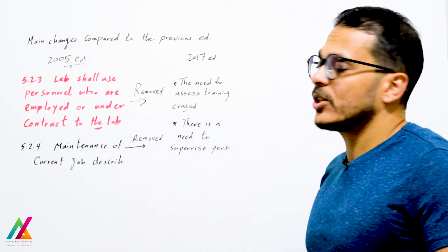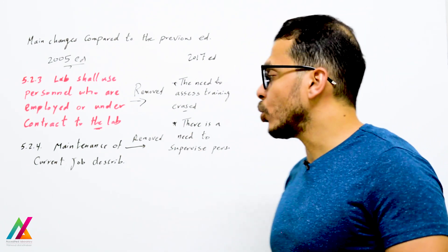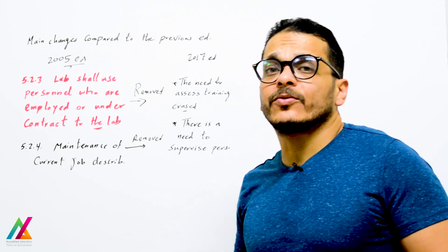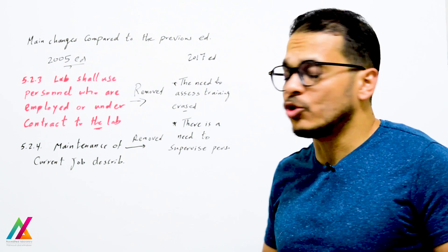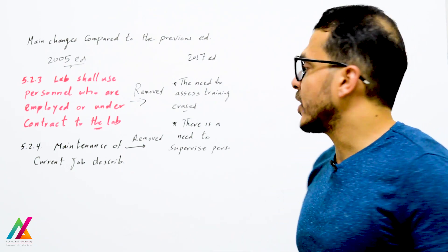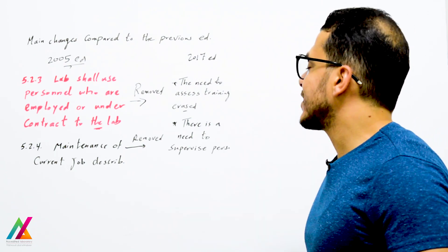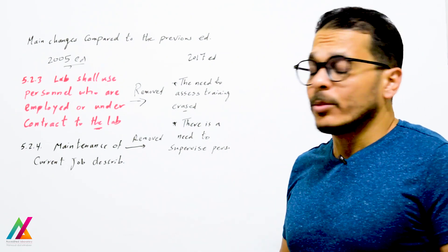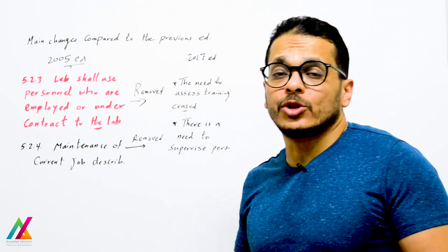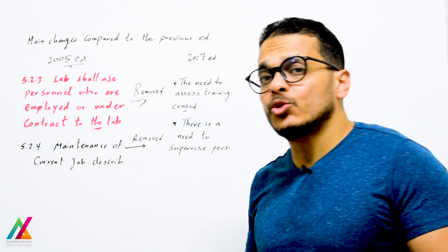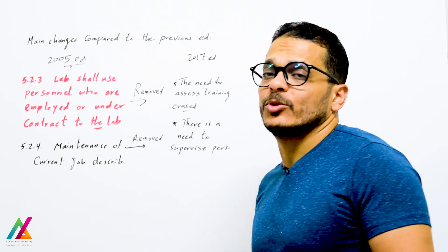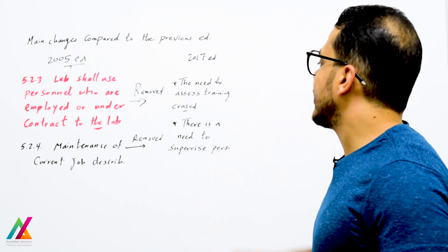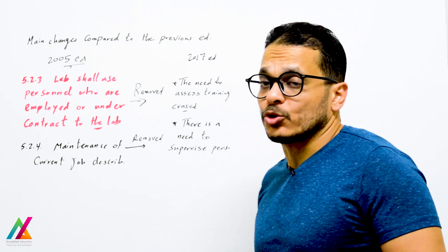Comparing to the 2005 edition: clause 5.2.3 requiring labs to use personnel employed or under contract has been removed in 2017. Clause 5.2.4 on maintenance of current job descriptions has also been removed, though you may still use a job description form or find another suitable approach. The need to assess training has also been removed, but you will still prepare a training procedure and can add training assessment to it.